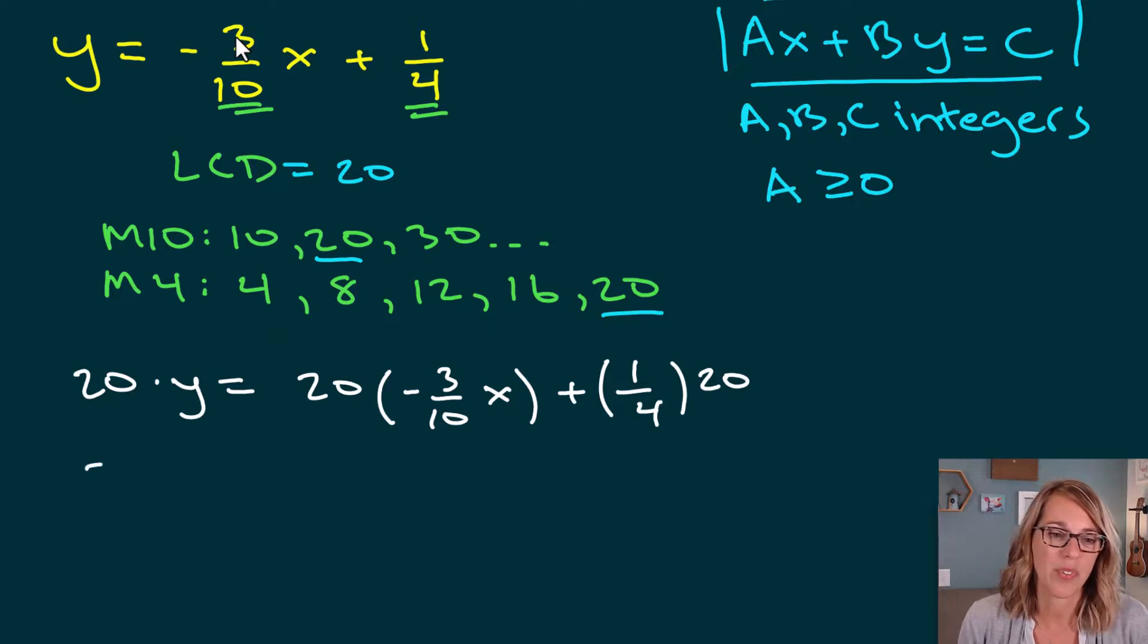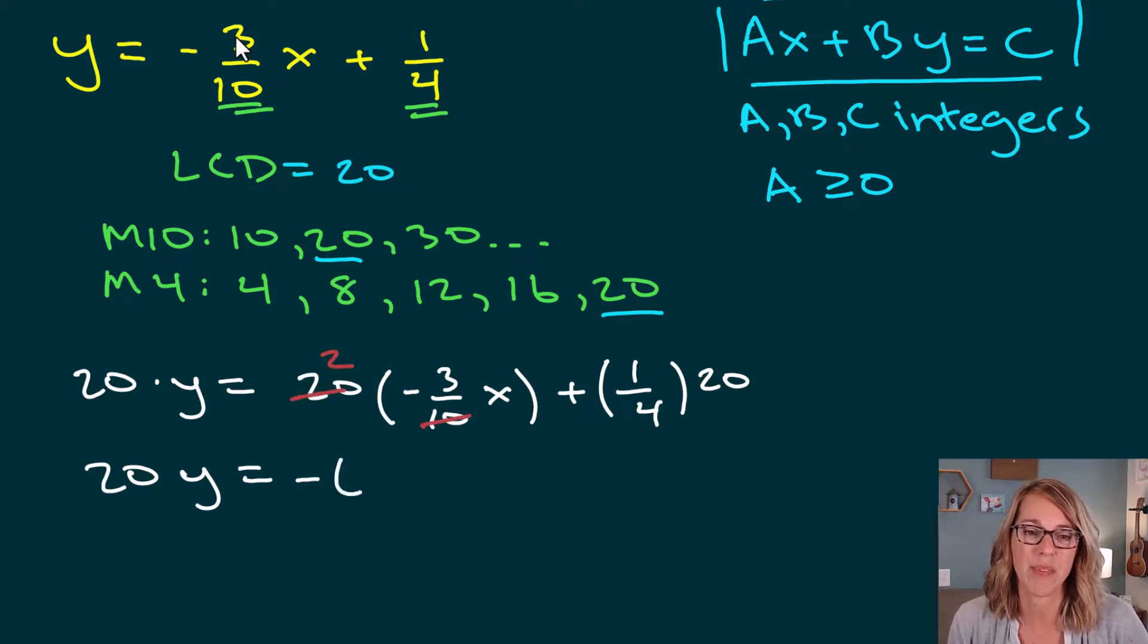I end up with 20y is equal to, let's cancel, 10 goes into 20 twice. So I get 2 times negative 3. That's going to be negative 6x. And then 4 goes into 20 five times. So I get a plus 5.